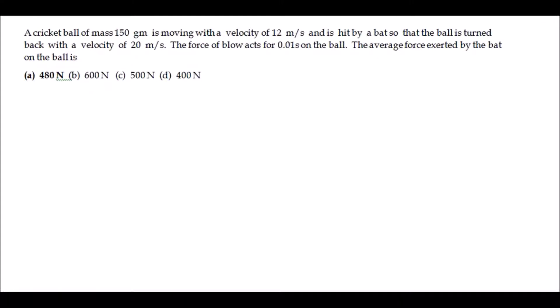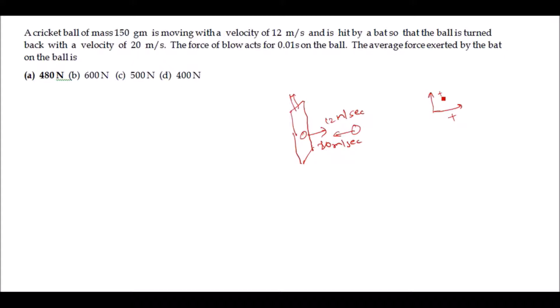Next problem: a cricket ball of mass 150 grams is moving with a velocity of 12 m/s and is hit by a bat so that the ball turns back with a velocity of 20 m/s. The force of the blow acts for 0.01 seconds. Taking the return direction as positive, the initial velocity is −12 m/s and the final velocity is +20 m/s.